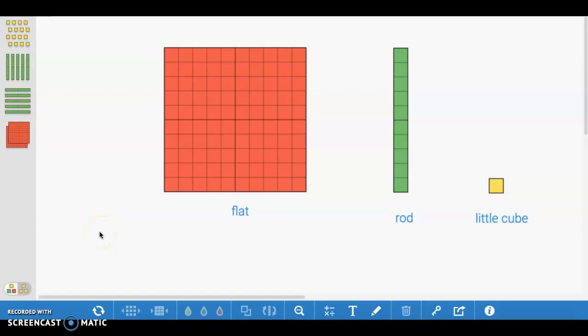These are models for place value blocks. You'll notice that there are little cubes which are represented in yellow, and then we have a rod which is equal to 10 of the little cubes.